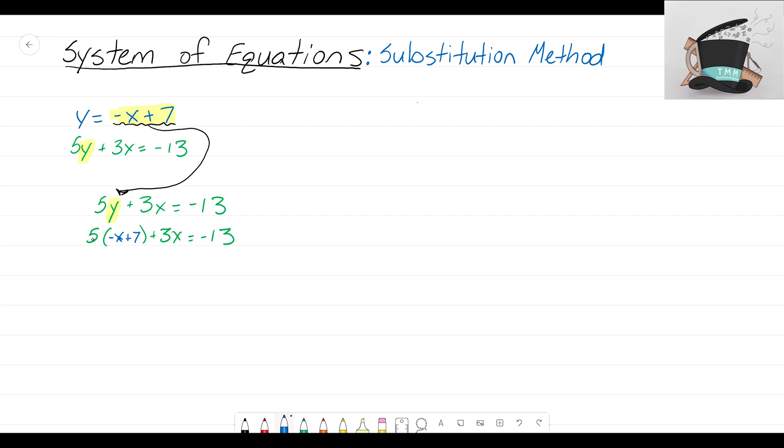Now I have this equation with one variable - I have x's there. I can solve this and figure out what x is. First things first: I have a parenthesis with a 5 in front, so we're going to distribute this 5 into both terms in that parenthesis. 5 times negative x turns into negative 5x.